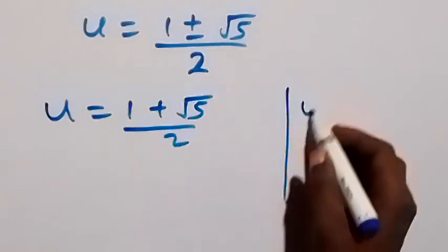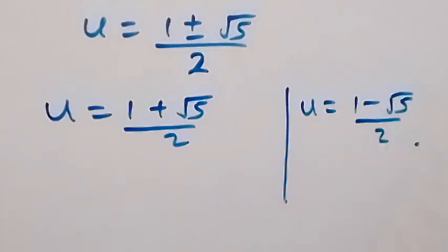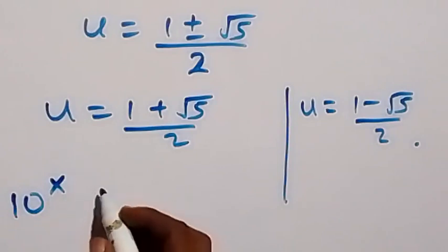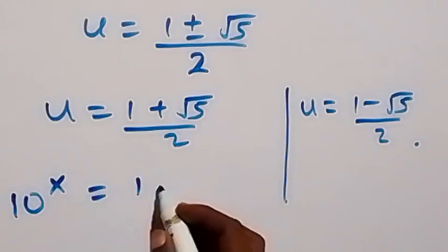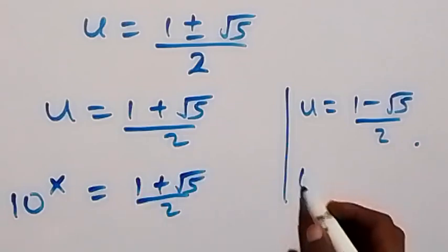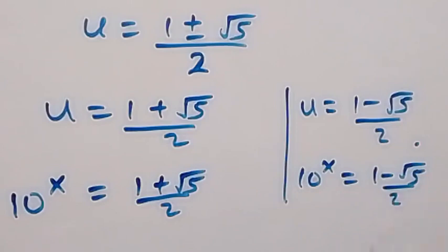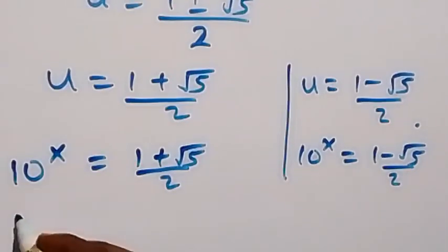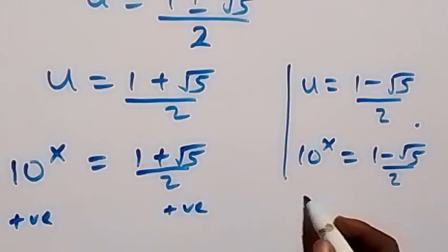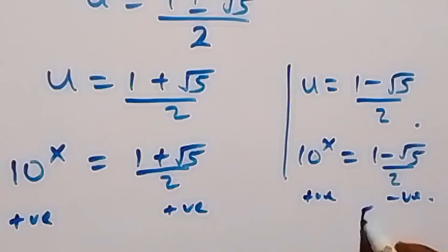Or u equals to 1 minus root 5 over 2. Recall that u was represented as 10 raised to power x, so we have 10 raised to power x equals to 1 plus root 5 over 2 on one side, and 10 raised to power x equals to 1 minus root 5 over 2 on the other side. The first gives positive results so there is a resolution. The second gives a negative value, so no resolution — we reject that side.